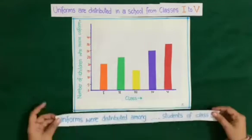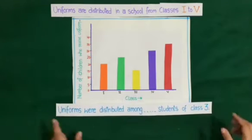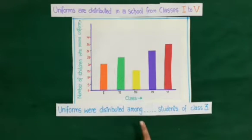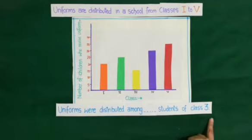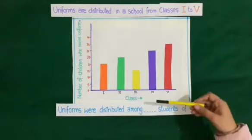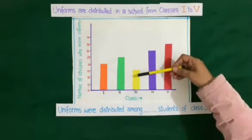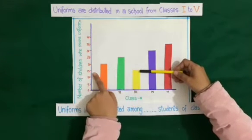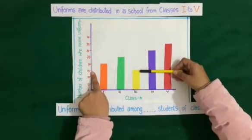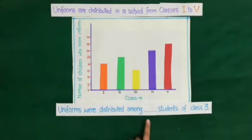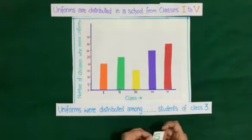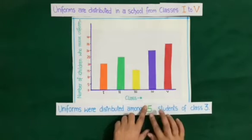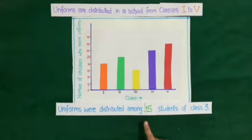Next question: uniforms were distributed among blank students of class 3. If we look at the rectangular bar of class 3 and check how many students received uniforms, the answer is 15. So 15 students of class 3 received uniforms.